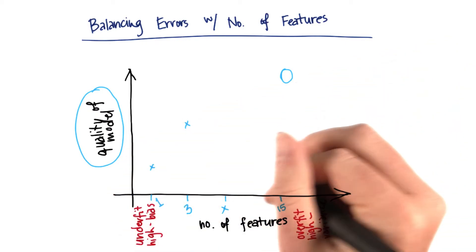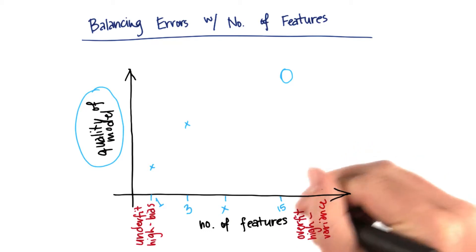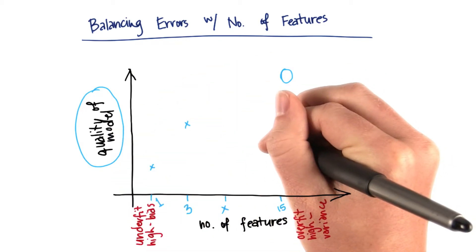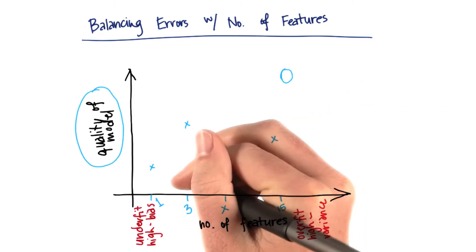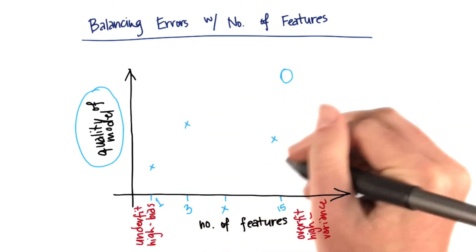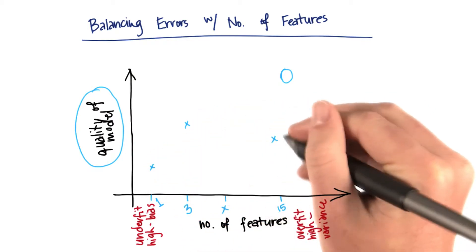What I'll actually find, though, is that I'm starting to become susceptible to this overfitting high variance type regime. So maybe the quality of my model has actually become a little bit lower than the quality that it was at three features. Because now I'm starting to overfit, where before I was underfitting with one, I'm now overfitting with 15.